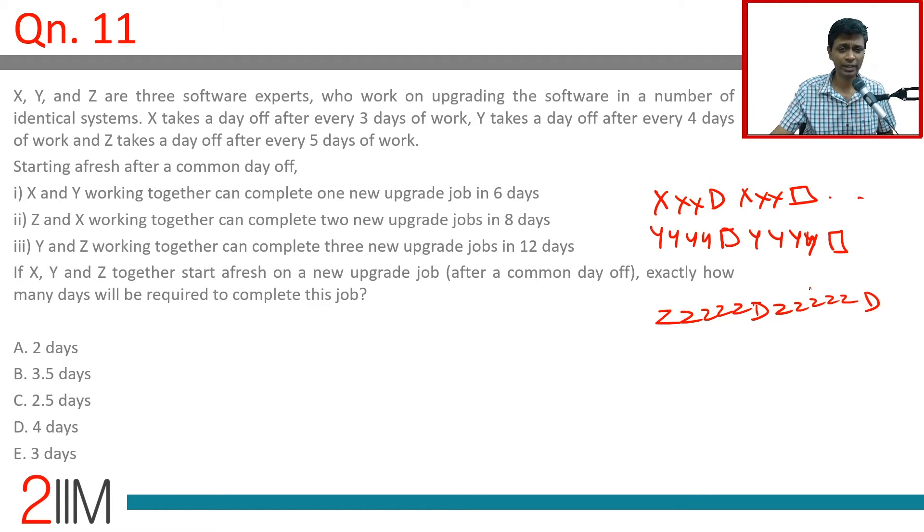X and Y working together can complete one upgrade job in six days. In six days, X would have got only one day off, Y would have also got only one day off. So five days of X, five days of Y can complete one upgrade job.